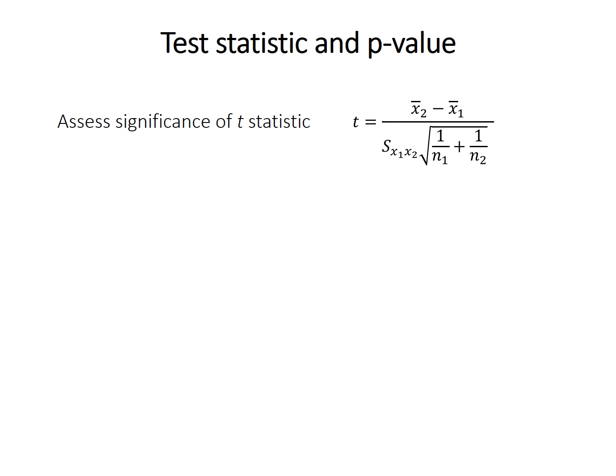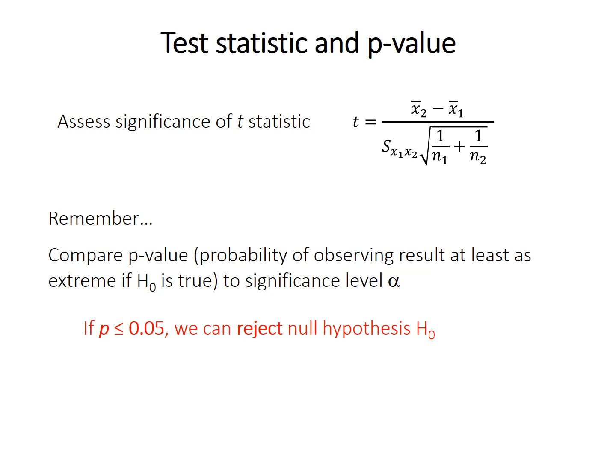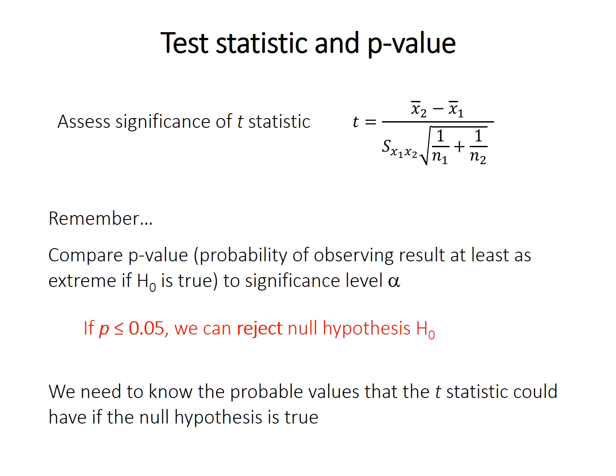To assess its statistical significance in the null hypothesis framework, we need to calculate the p-value, which is the probability of observing a t-statistic at least as extreme as what we got if the null hypothesis is true. We then compare that to our significance level alpha, which is traditionally 0.05. If the resulting p-value is 0.05 or smaller, we can reject the null hypothesis and say that the two samples have significantly different means. To calculate the p-value, we need to know the probability of observing particular values of t if the null hypothesis is true.